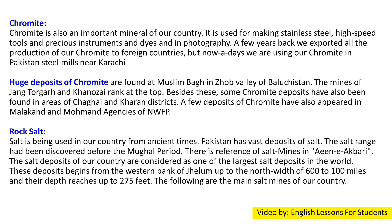The mines of Jan, Tsurgar, and Khanzui rank at the top. Besides these, some chromite deposits have also been found in the areas of Chagai and Kharan district. A few deposits of chromite have also appeared in Malakand and Mohmand agencies of NWFP.